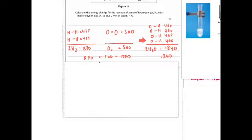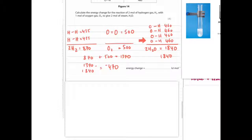So simply add up the energy on one side, so this is 1370 on this side, and subtract from the other side, which gives you minus 470 change.